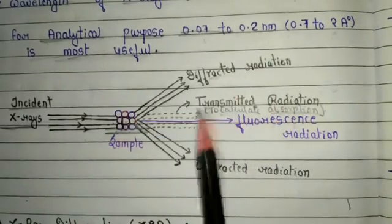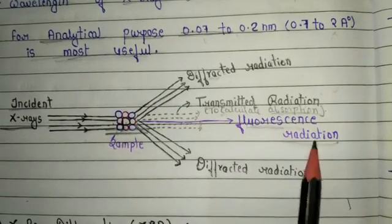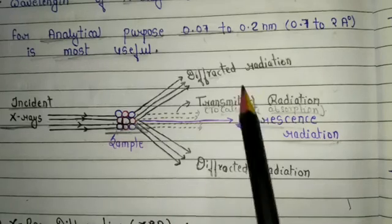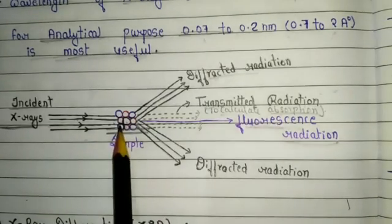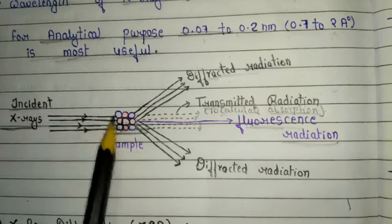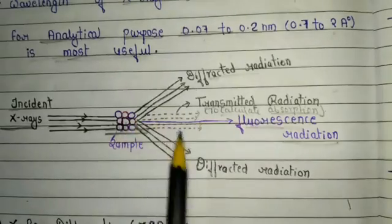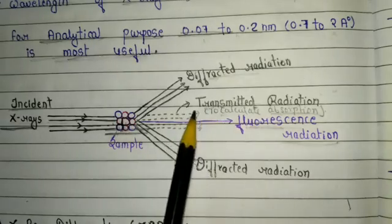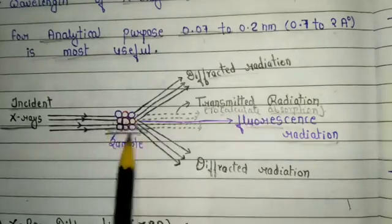The three kinds of radiation we get when incident X-ray strikes the sample are: first, diffracted radiation; second, transmitted radiation; and third, fluorescence radiation. Diffracted radiation is completely dependent on the atoms present in the sample. When incident X-ray strikes the sample, some X-rays are diffracted at many angles, and this depends on the atomic structure present in the sample.